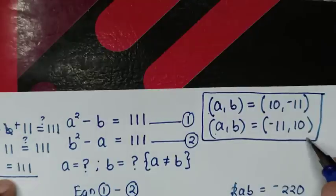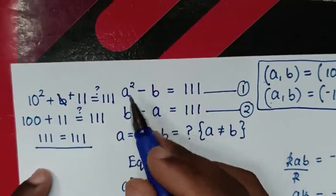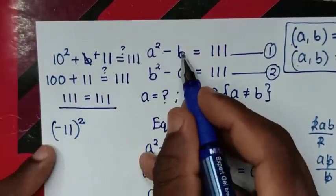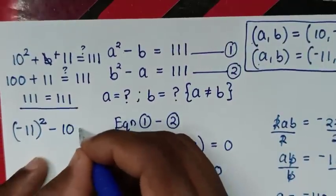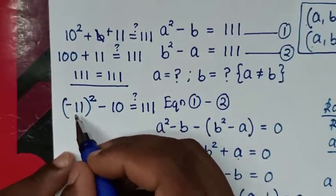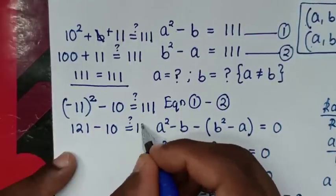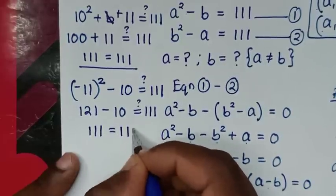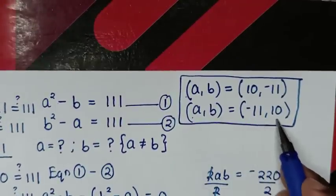Now checking the second solution (a, b) equals (negative 11, 10). Substituting into equation 1: a² minus b equals (negative 11)² minus 10 equals 121 minus 10 equals 111. The left side equals the right side, so the second solution is also confirmed correct.